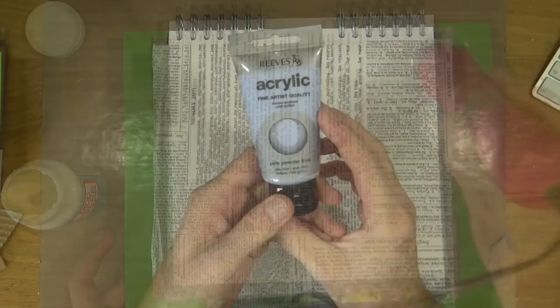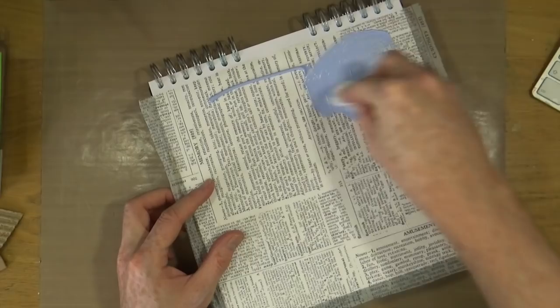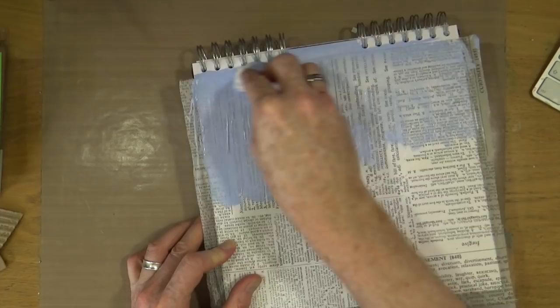Our first color today is the Pale Powder Blue acrylic paint from Reeves, which I'm just going to dab on with a baby wipe. I'm just going to smear it across the page around about two-thirds of the way down, so I'm creating a kind of sky effect today using the paint.